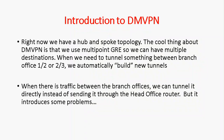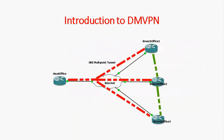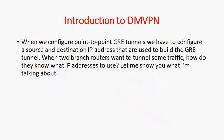But this introduces a problem. As shown in the diagram, the green colored dotted lines represent dynamic tunnels. Using Dynamic Multi-Point VPN it dynamically forms the tunnel between branch office 1 and 2, and 2 and 3. When we configure point-to-point GRE tunnel we configure source and destination IP addresses to build the tunnel. So when two branch routers want to tunnel some traffic, how do they know the IP address to use?